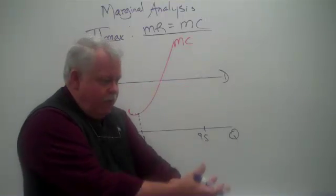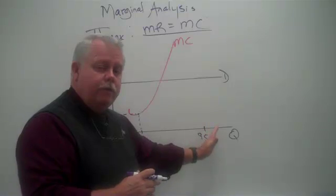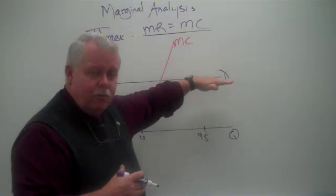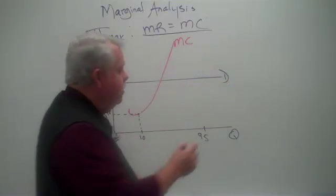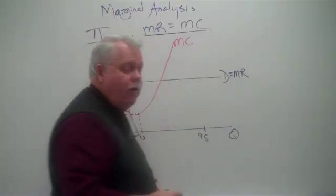Remember, they get the same price, the same extra revenue every time they sell one more unit. And so for that reason, when you see the horizontal demand curve, the perfectly elastic demand curve, that is also going to be the marginal revenue curve.